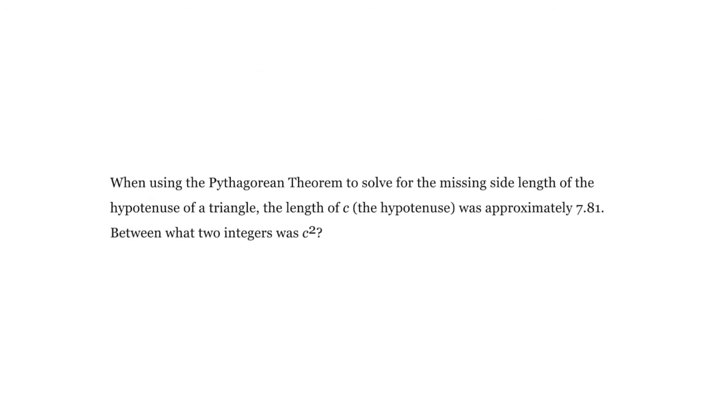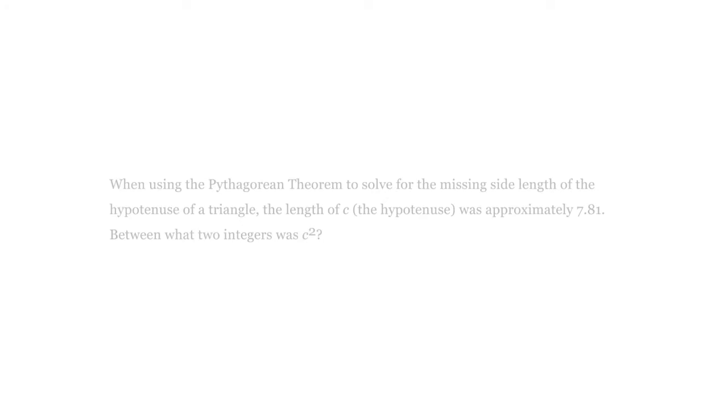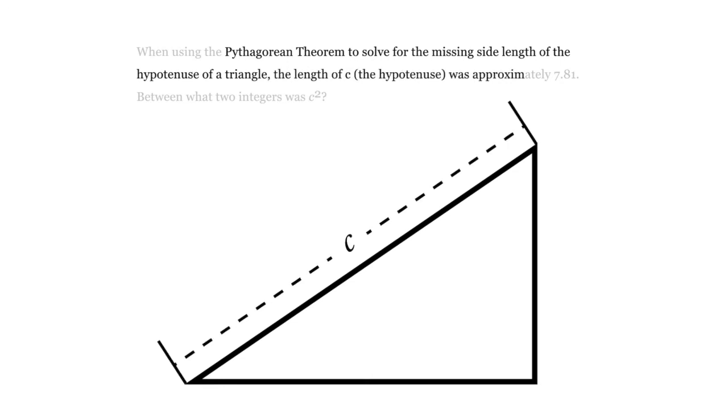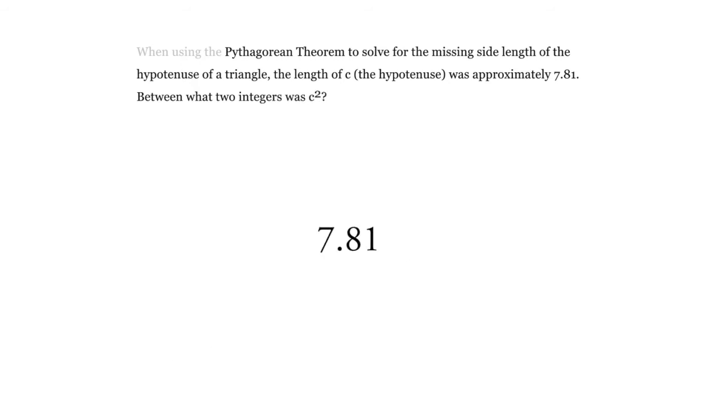So what they're asking here is, we have a Pythagorean theorem and we're going to solve the missing side length of the hypotenuse of a triangle. The length C of the hypotenuse was approximately 7.81. Between what two integers was C squared? Well really, it's just asking what's 7.81 squared.